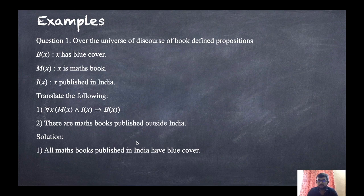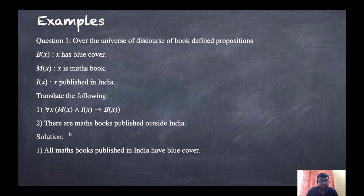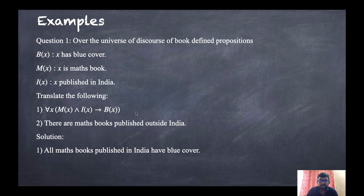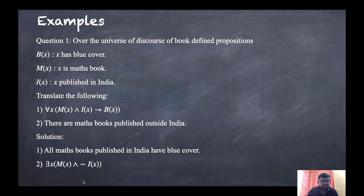The second part: translate 'there are mad books published outside India.' There are mad books means M(x); published outside India means not I(x), i.e., ¬I(x). 'There are' means there exists. So the symbolic form is: ∃x [M(x) ∧ ¬I(x)], meaning there exist mad books published outside of India.